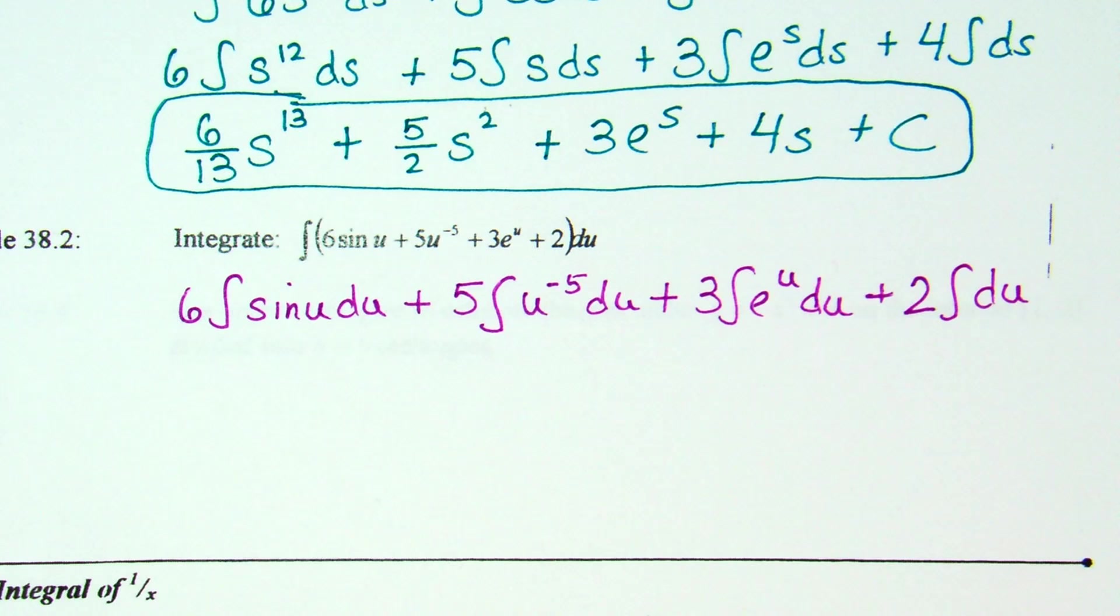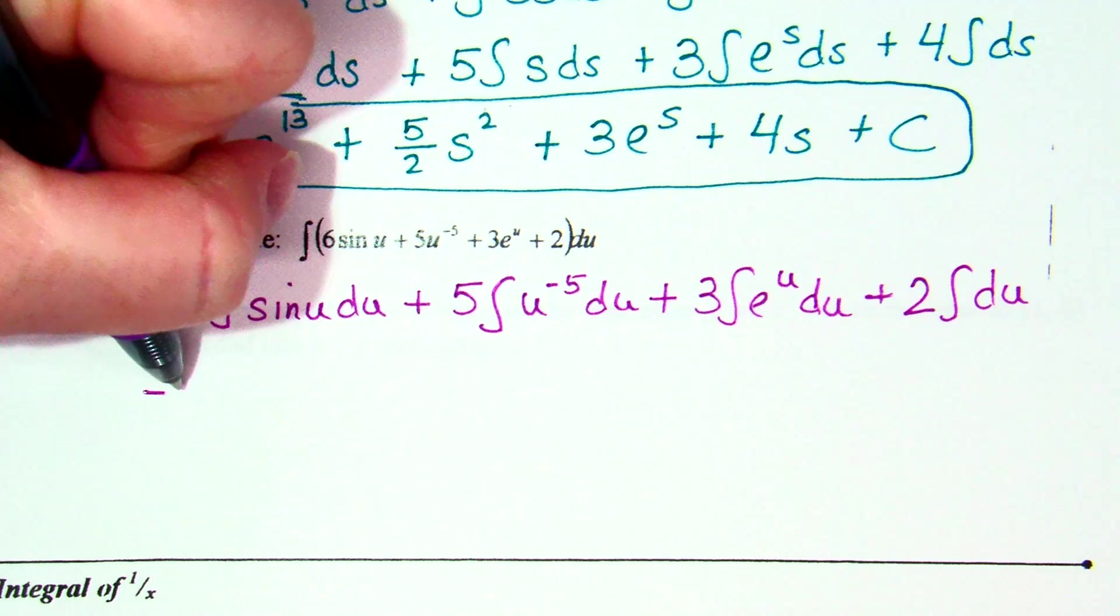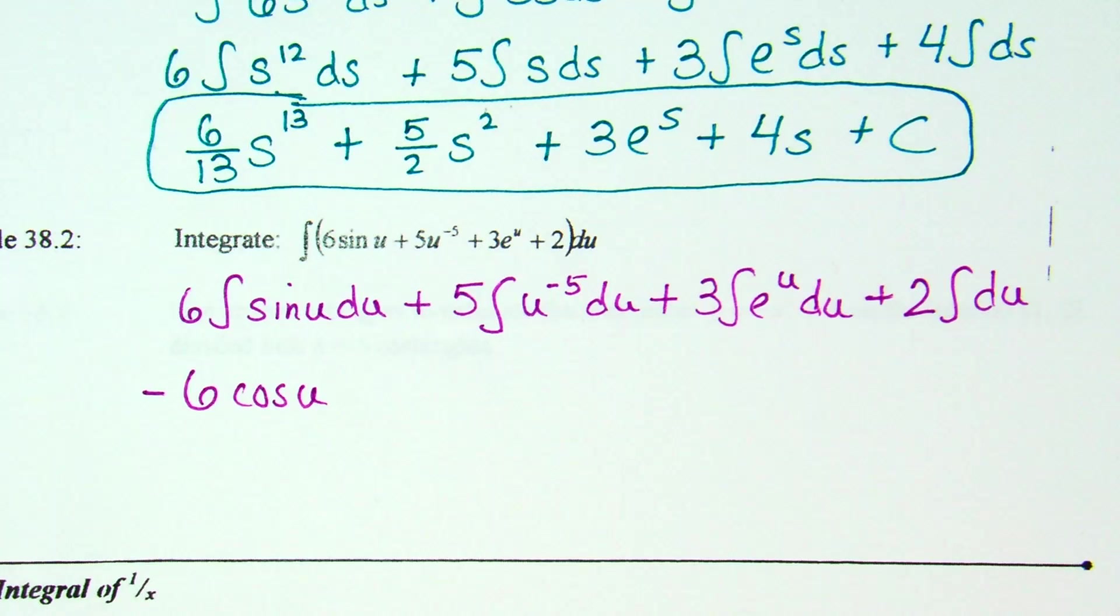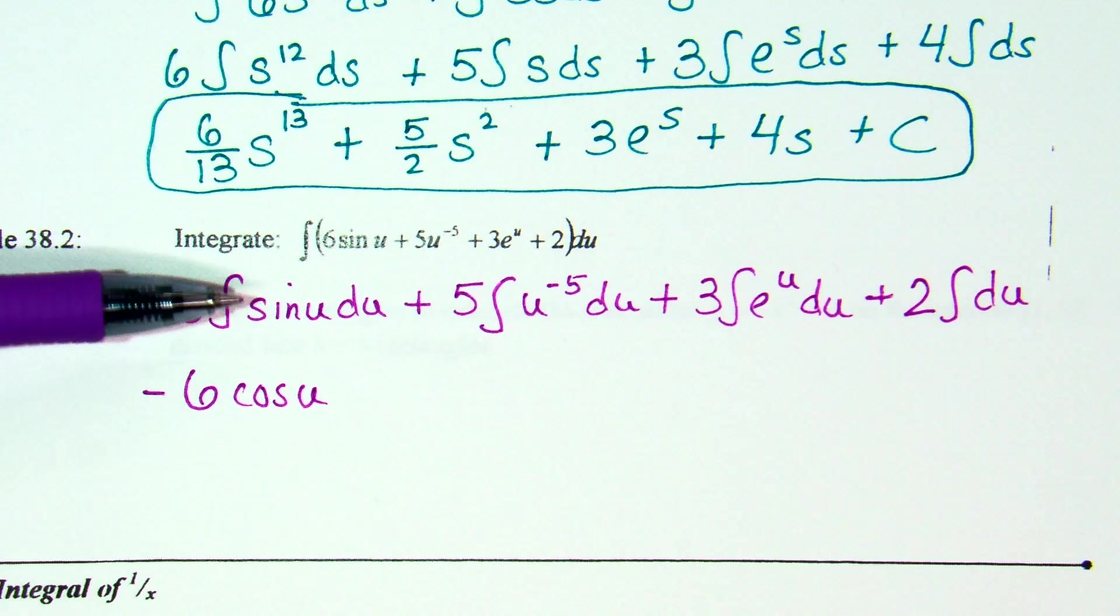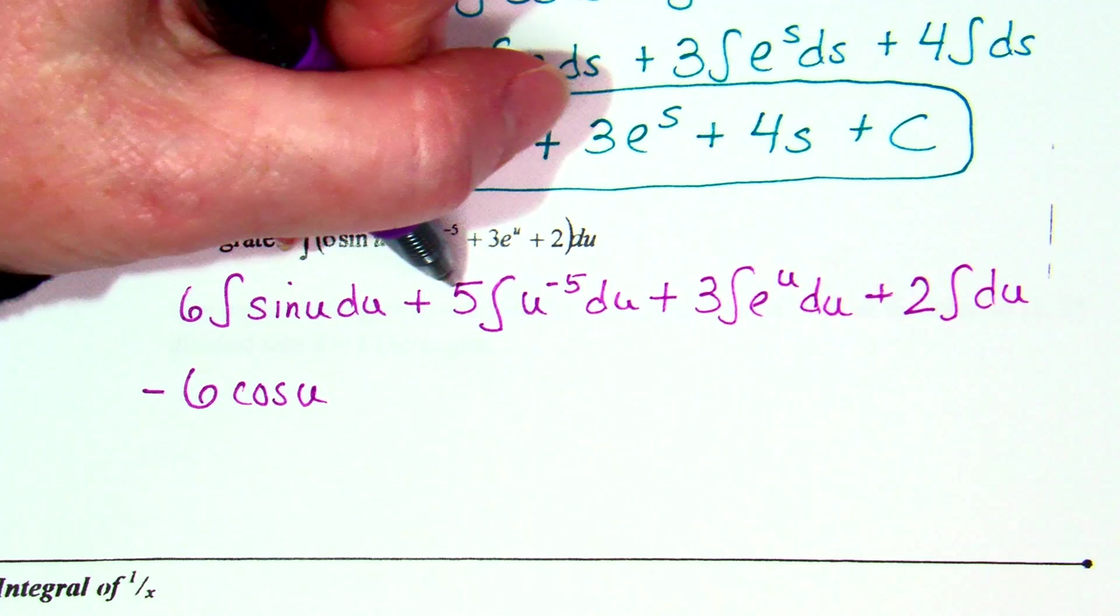So integral of sine, negative cosine. This is going to be negative 6 cosine u. And how my brain works, are you guys okay with that one or do you need me to talk? I look at how do I get derivative of cosine is negative sine. So since this is positive, I have to put the negative over here.